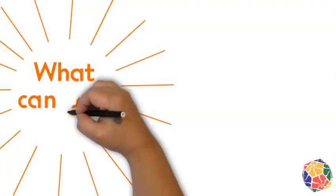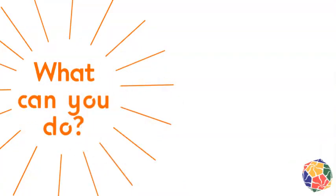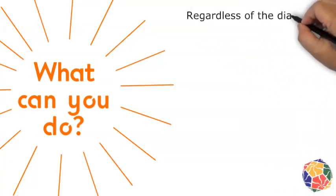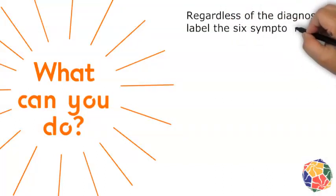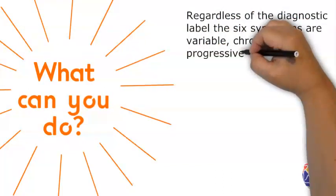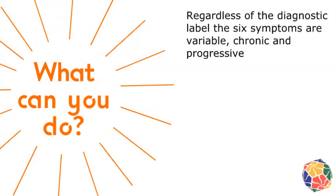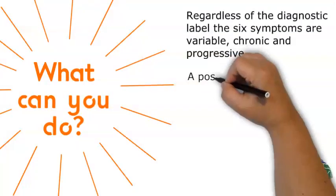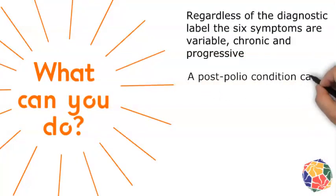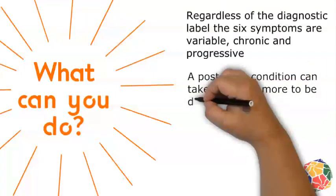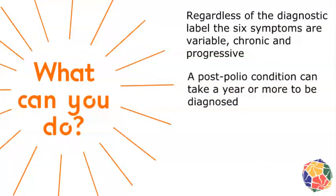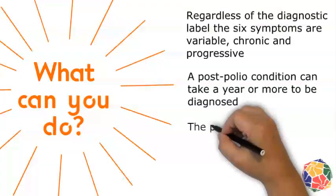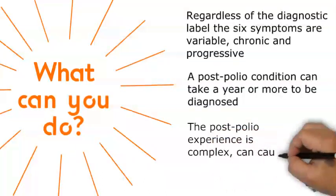Regardless of the diagnostic label — late effects of polio or post polio syndrome — the six symptoms experienced by those exposed to polio are variable, and their condition is chronic and progressive. It can take a year or more for everyone involved to be sure that the symptoms are from polio and not from something else. This is a good thing, but it can be frustrating. Clinicians should be considerate of how people with post polio symptoms experience and cope with the uncertainty and the changes they are living through.